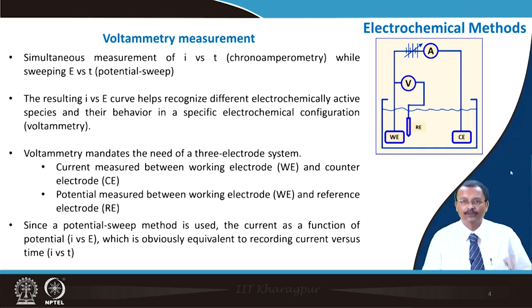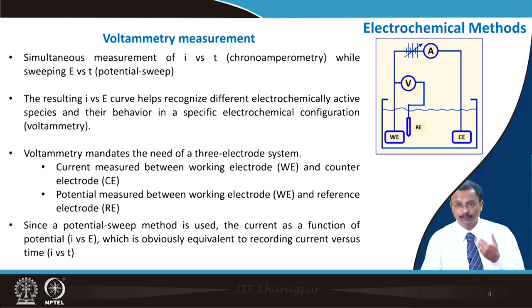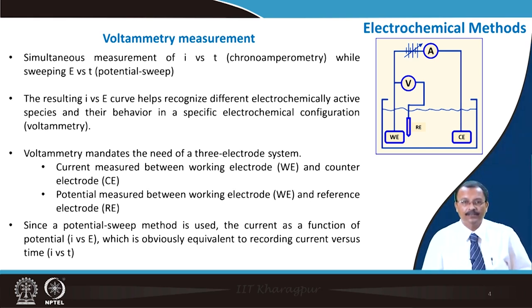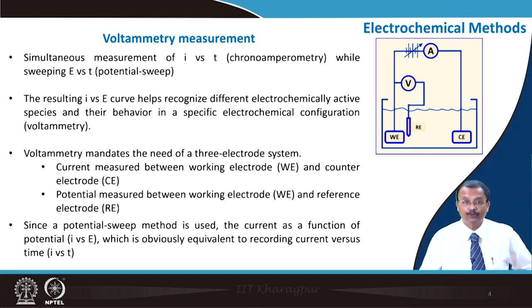We will come back to this three-electrode system. In voltammetry measurement, we simultaneously measure I versus t, which is chronoamperometry, and simultaneously sweep voltage potential as a function of time — this is a potential sweep. That results in an I versus E curve and helps us recognize different electrochemically active species and their behavior in a specific electrochemical configuration.